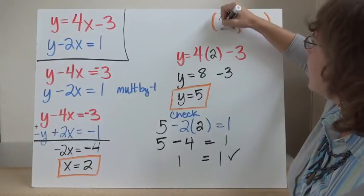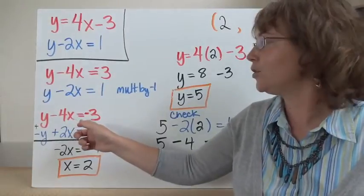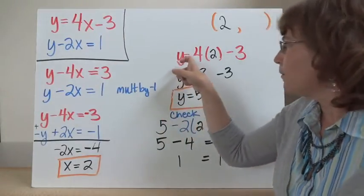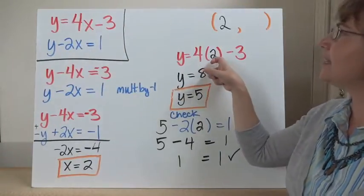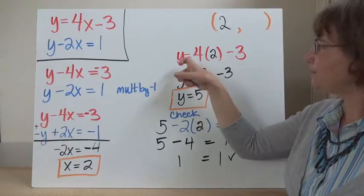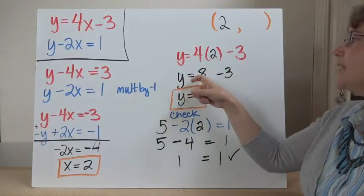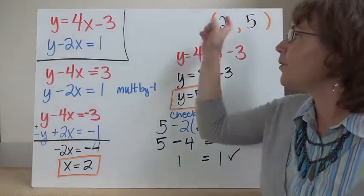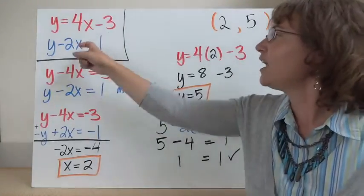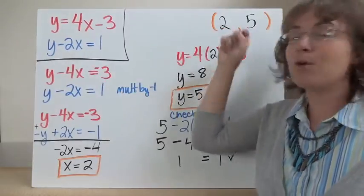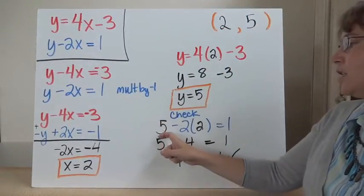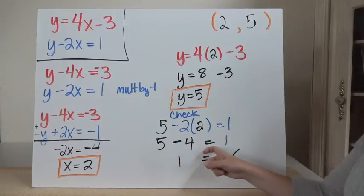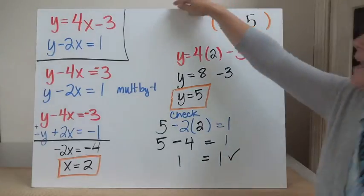That's my x coordinate. Now I go back and substitute using the very first equation: y equals 4 times x minus 3. Substituting x equals 2: y equals 4 times 2 minus 3, which is 8 minus 3, so y equals 5. That's my y coordinate. The coordinate point where these two lines cross is (2, 5). To check, using the equation y minus 2x equals 1: substituting y equals 5 and x equals 2, I get 5 minus 2 times 2, which is 5 minus 4, which equals 1. And that's equal to 1 — it all checks out.